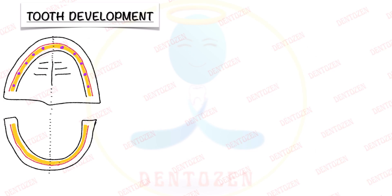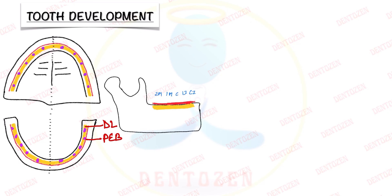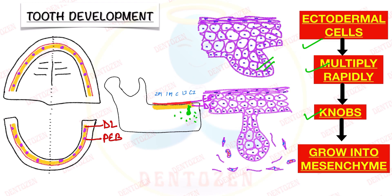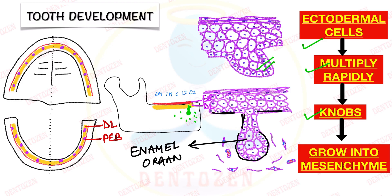Let's magnify and see what is happening inside the dental lamina. Within dental lamina, at 10 points in the mandible and 10 points in the maxilla — where our deciduous teeth are going to form — the ectodermal cells multiply rapidly, forming knobs that grow into the mesenchyme. This rapid division leads to formation of rounded ovoid swellings in the mesenchyme. These swellings, which will form one and only enamel, are called the enamel organ. The enamel organ is attached to the overlying epithelium of the mouth through the dental lamina.